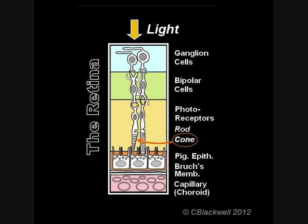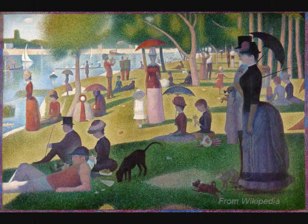The cones function in bright light and give us our color vision. In dim light, rods give us grayscale vision. They do not contribute to color vision in daylight.